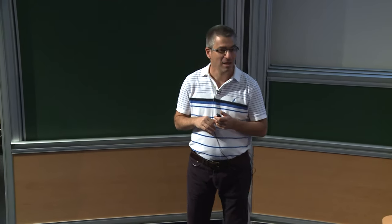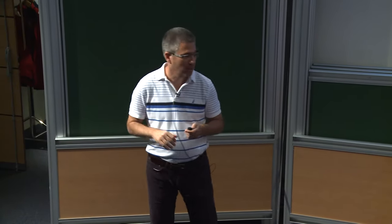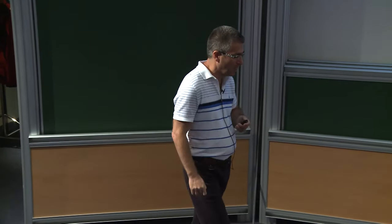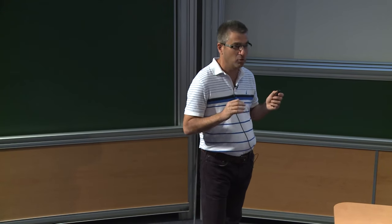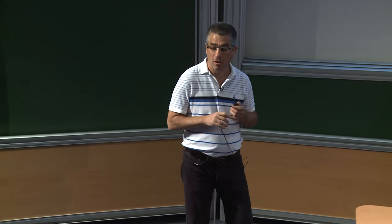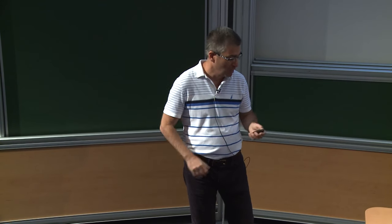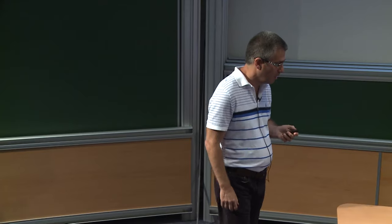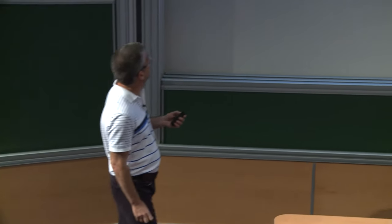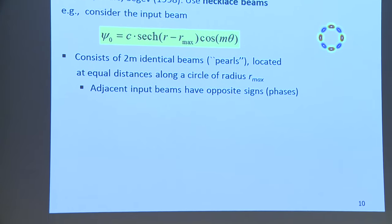How can we stabilize laser beams when they propagate in bulk medium? It's an extremely important problem, partly because of atmospheric propagation. One very intriguing idea was proposed in 1998: to use a necklace beam.